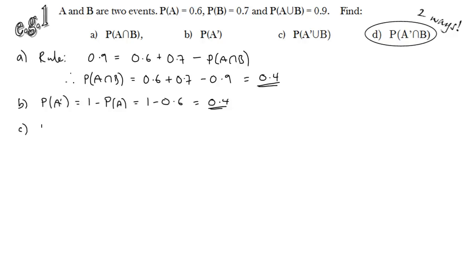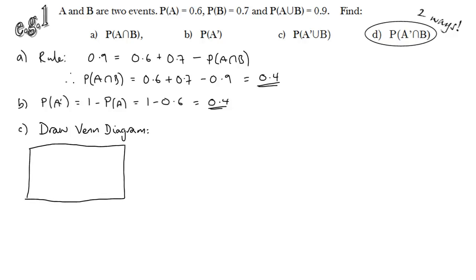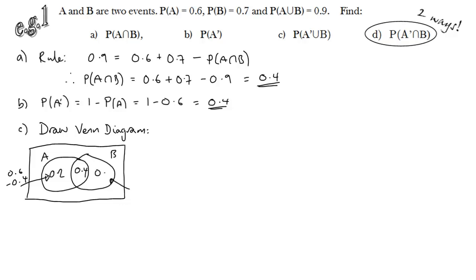Part c: the easiest way to work this out is to draw a Venn diagram, and if you're not sure what to do in most questions, a Venn diagram can be very helpful. In my Venn diagram, the first thing I can label is the intersection — we worked that out in part a, so I can label 0.4 in the middle. I fill in all the other parts by subtraction: that bit is 0.2, because the probability of A is 0.6, so I subtract the intersection. Similarly for B, I get 0.3 by subtracting the intersection from the probability of B, which is 0.7. And I fill in the last bit by subtracting everything else from 1.